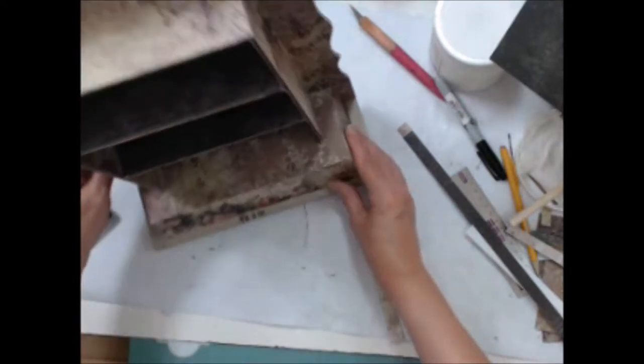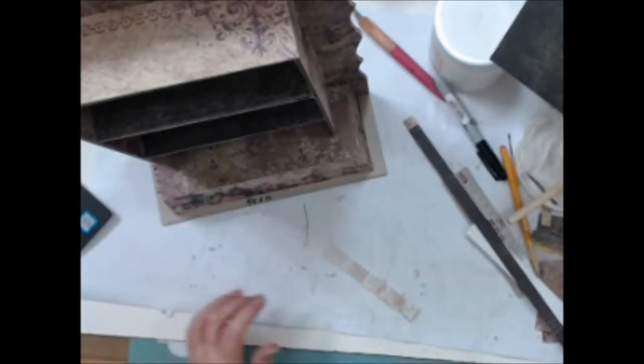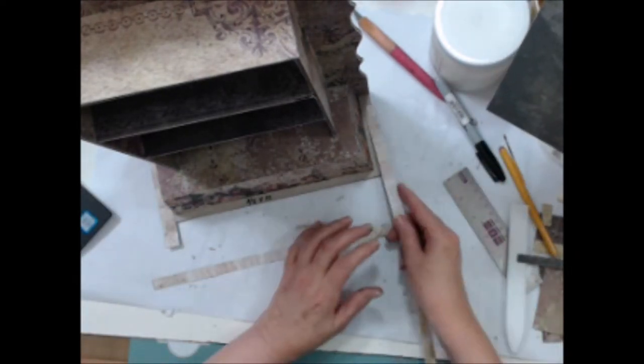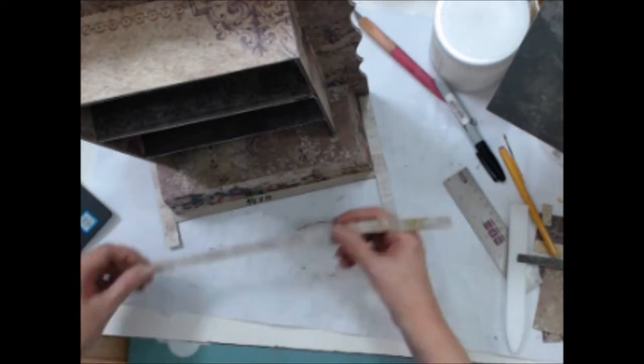Next, I cut a five-eighths inch wide strip of the paper for the sides and a three-eighths inch piece for the front. And I mitered the corners before I glued them down. This gives a nice finished look.